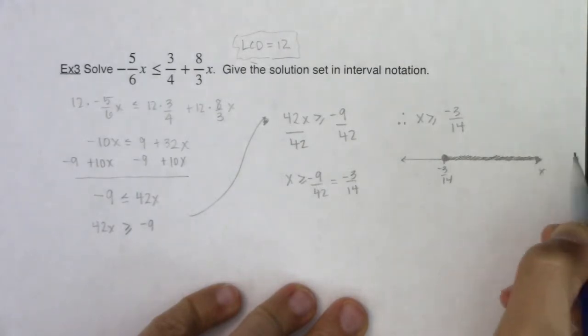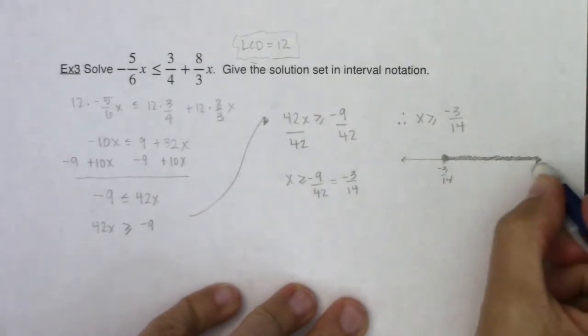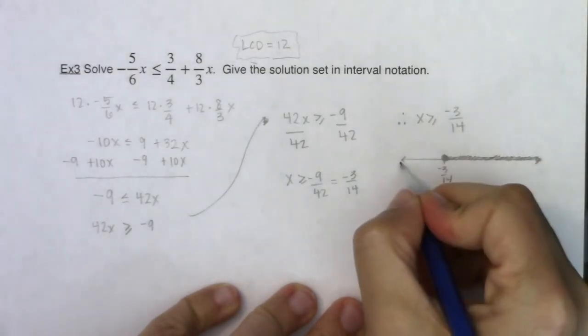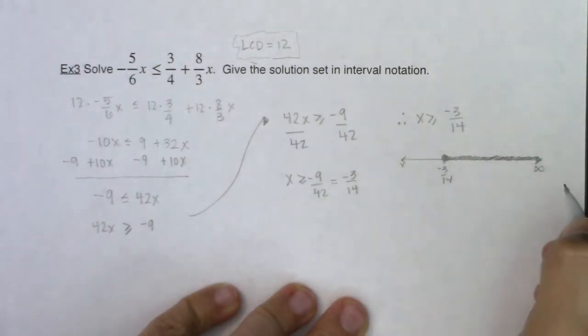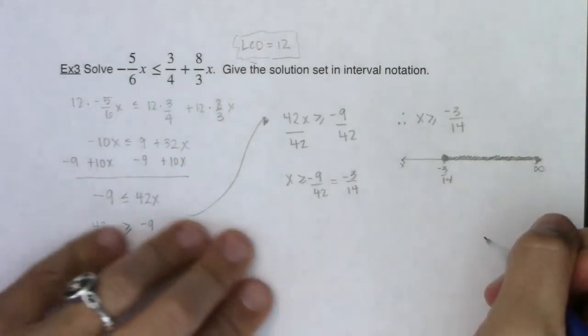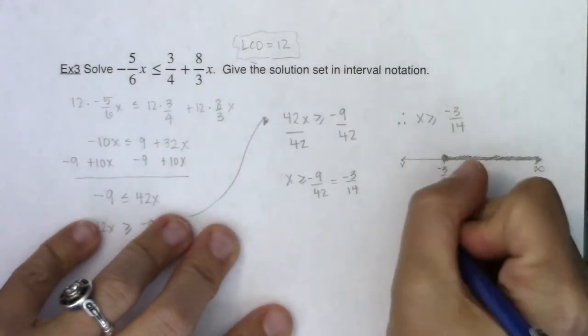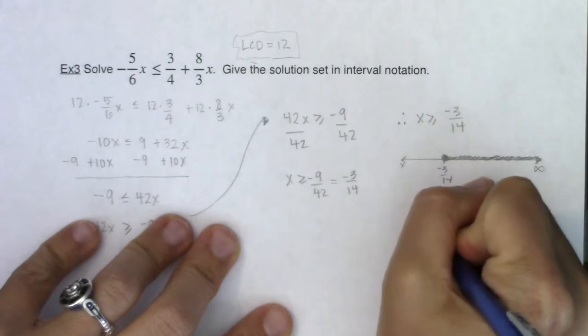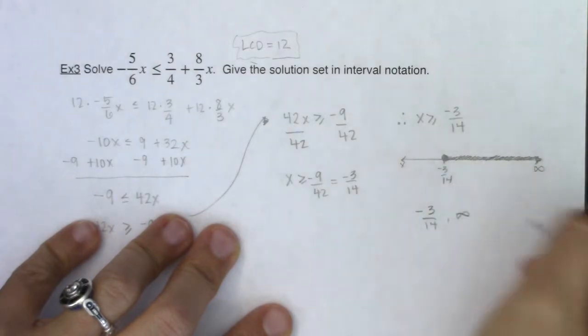And I know when I shade all the way to the right, oops, let me remove that x because it's in my way. I'll put the x here. That is positive infinity. So when I go to write this in interval notation, I know my low is negative 3 fourteenths, my high is infinity.